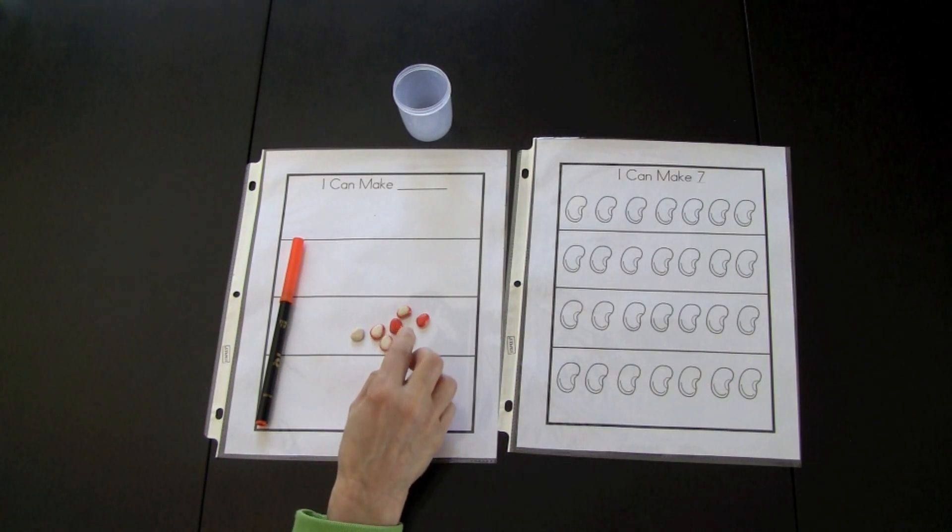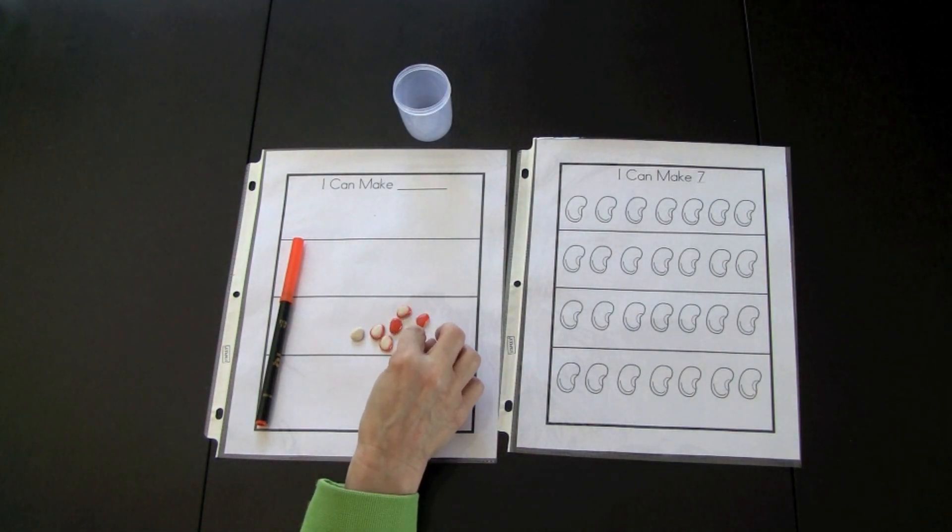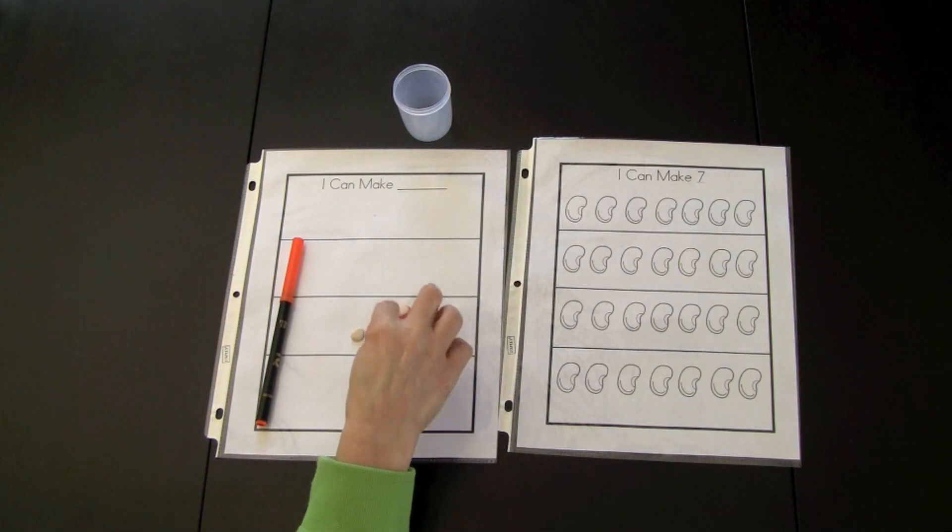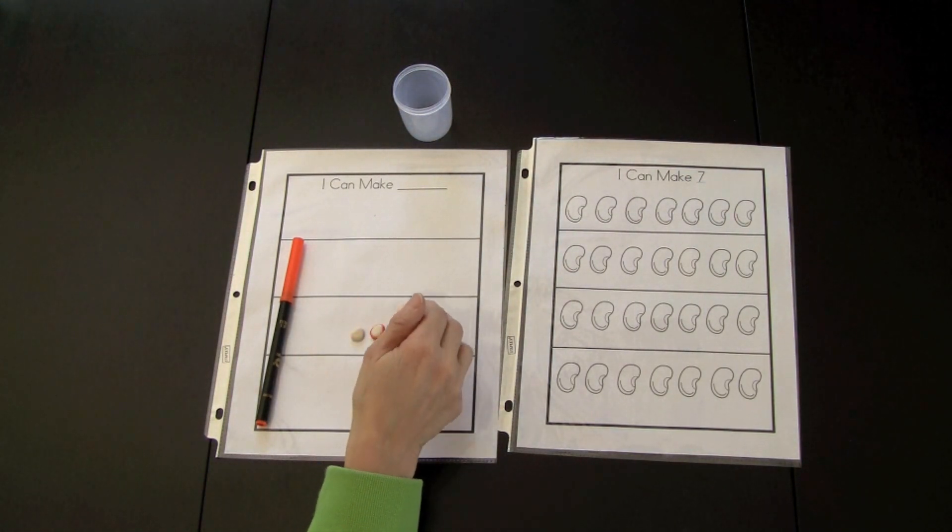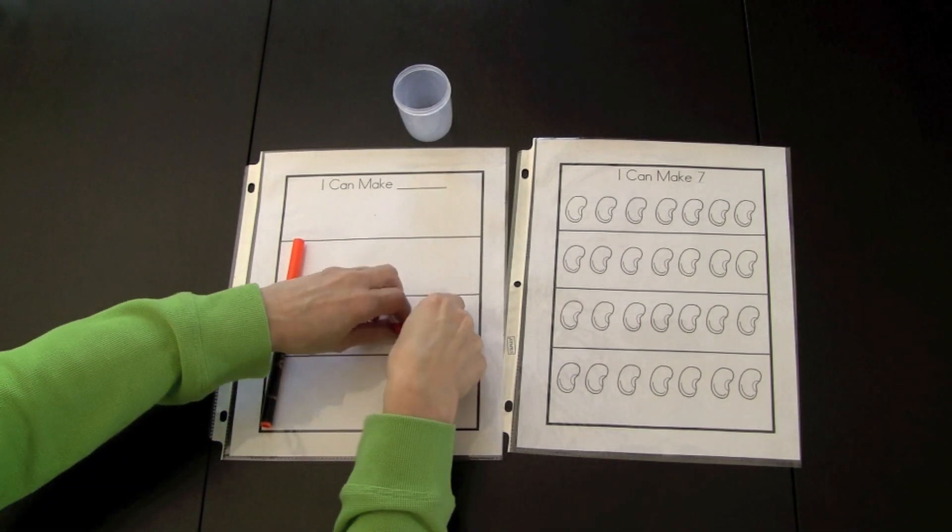I spray painted lima beans and allowed them to dry, so they become two colored sided counters. On one side is orange and the other side is white. The children would count seven lima beans and place these in a container.